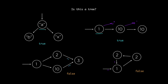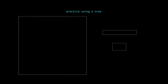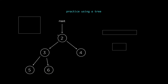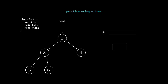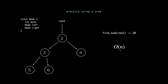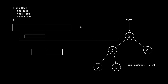Now that you hopefully have a clear idea of what a tree is, let's practice with this problem. You're given a tree — for example this one with the root being here — and this is a binary tree, so the class of each node has an integer data and two children left and right. The problem is writing a function called find_sum which takes the root of this tree as input and returns the sum of all the values within it. For this particular tree you want to return 20, because 2 plus 3 plus 5 plus 6 plus 4 equals 20. Try solving this in O(n) time where n is the number of nodes.